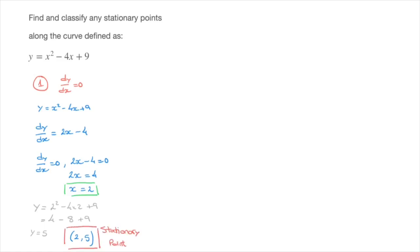Now that we have the stationary point, we need to classify it. In other words, we need to figure out if it's a minimum, a maximum, or a horizontal point of inflection. And for that, I move on to step 2, in which I use a sign table to study the sign of the derivative, dy/dx, on either side of the stationary point. And here's how I do that.